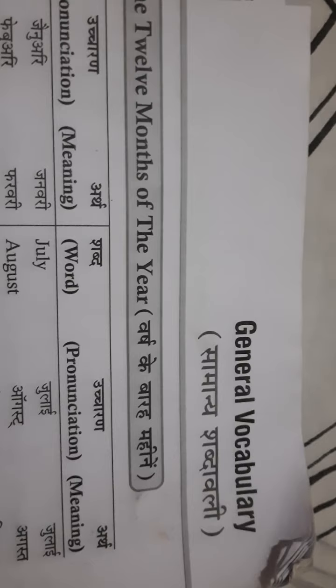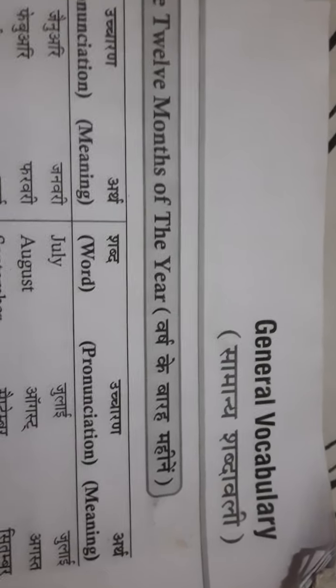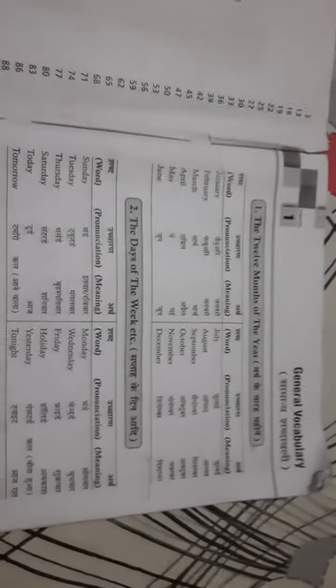Means, Samadhi Shabdavali. In this chapter, we will know about our 12 months, day names, some animals, some birds, some colors, some vegetables, etc.